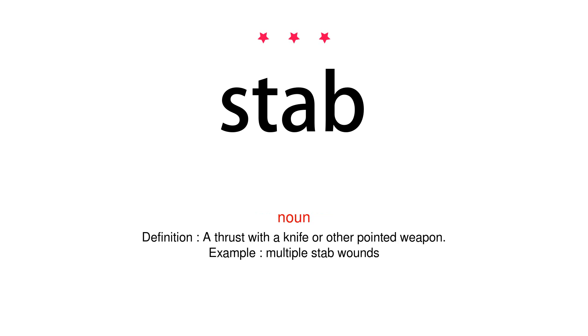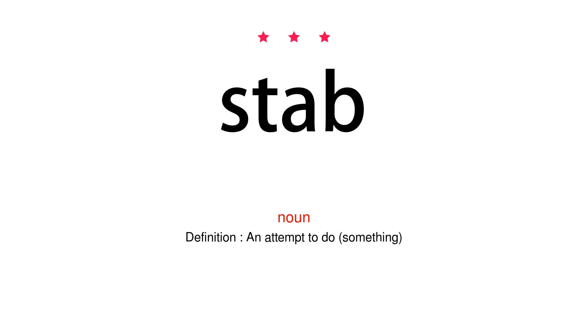Noun. Definition: A thrust with a knife or other pointed weapon. Example: Multiple stab wounds. Noun. Definition: An attempt to do something.